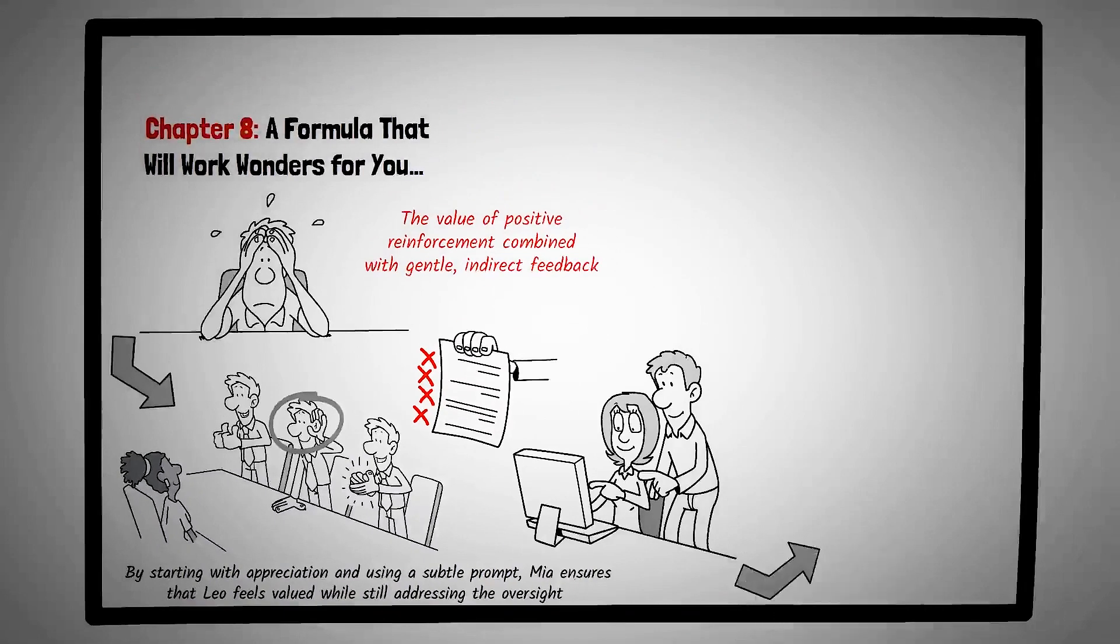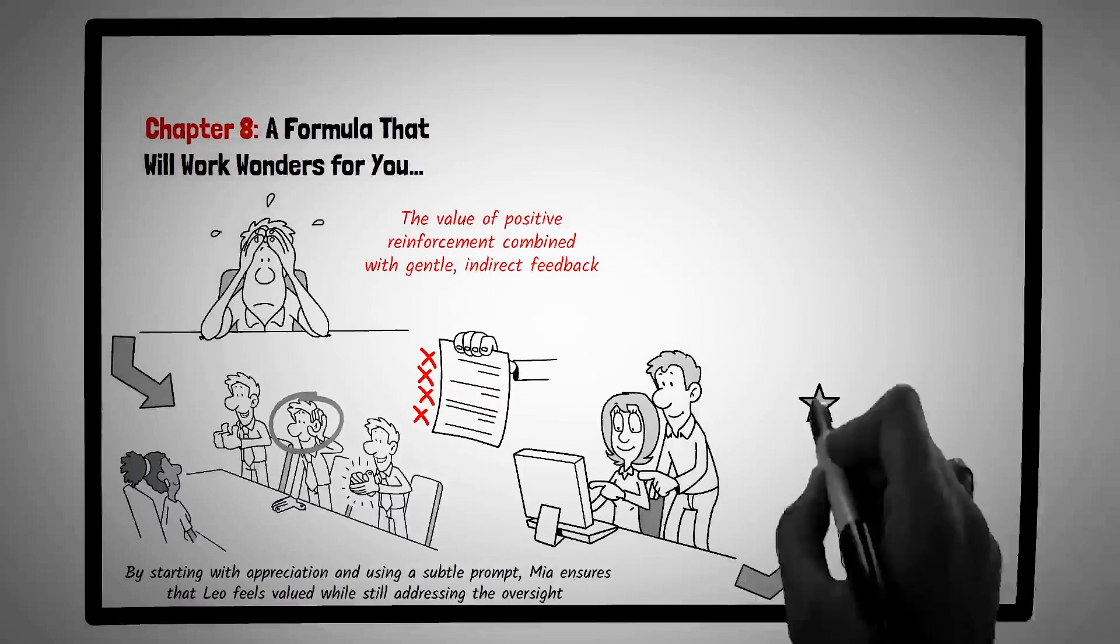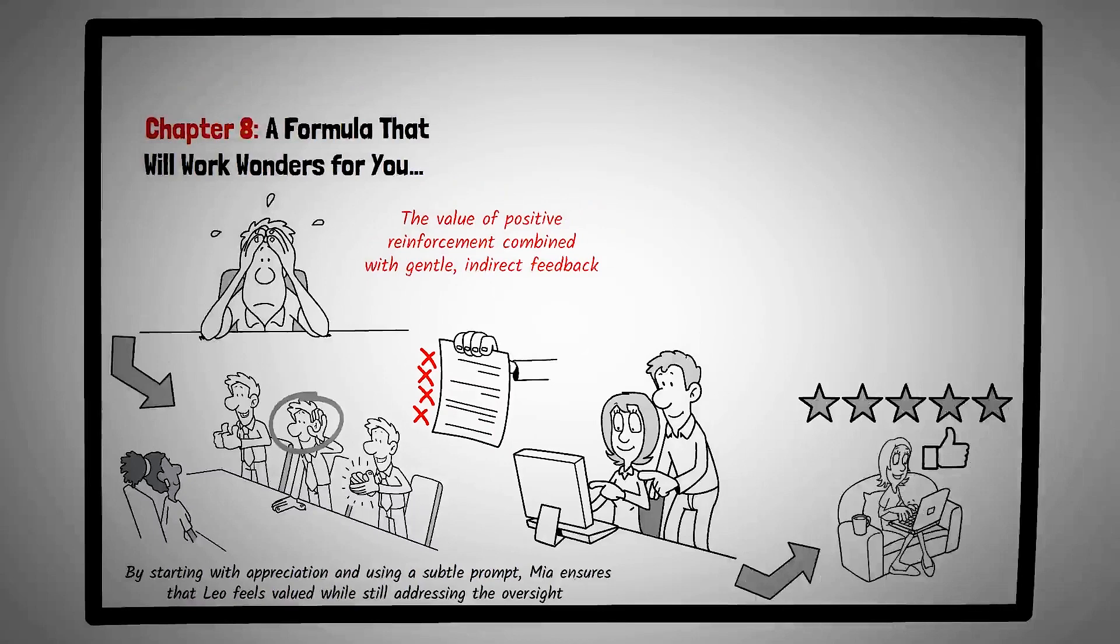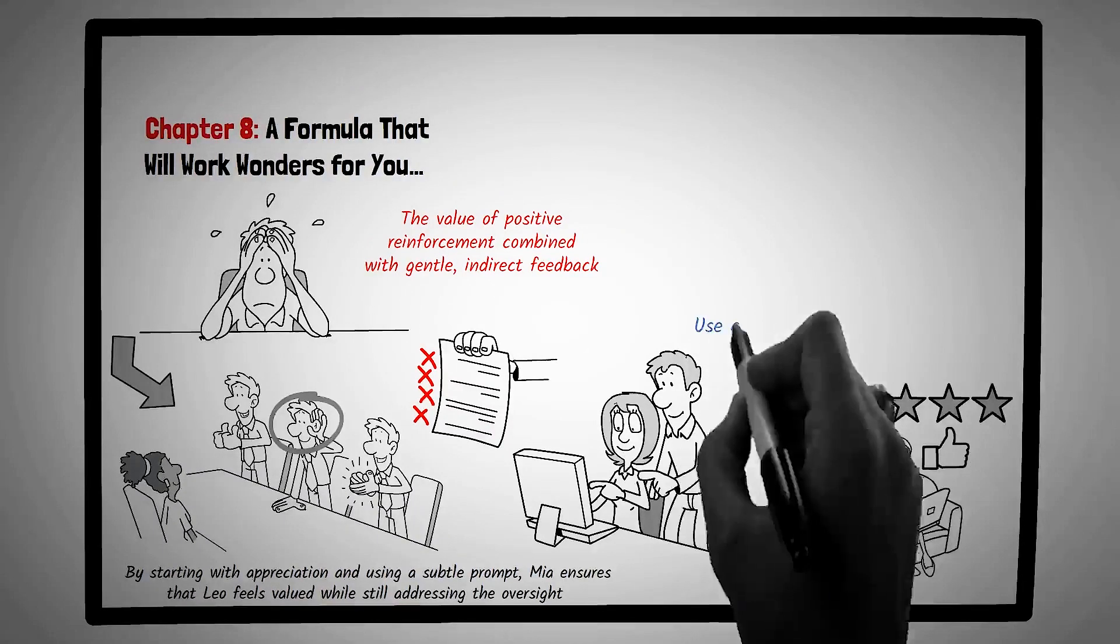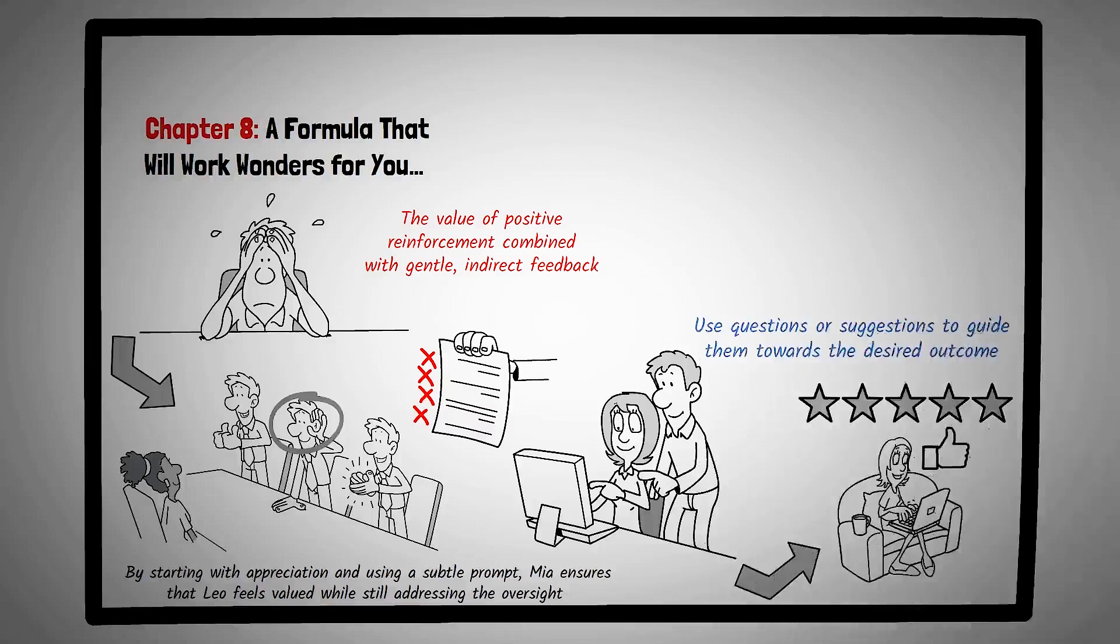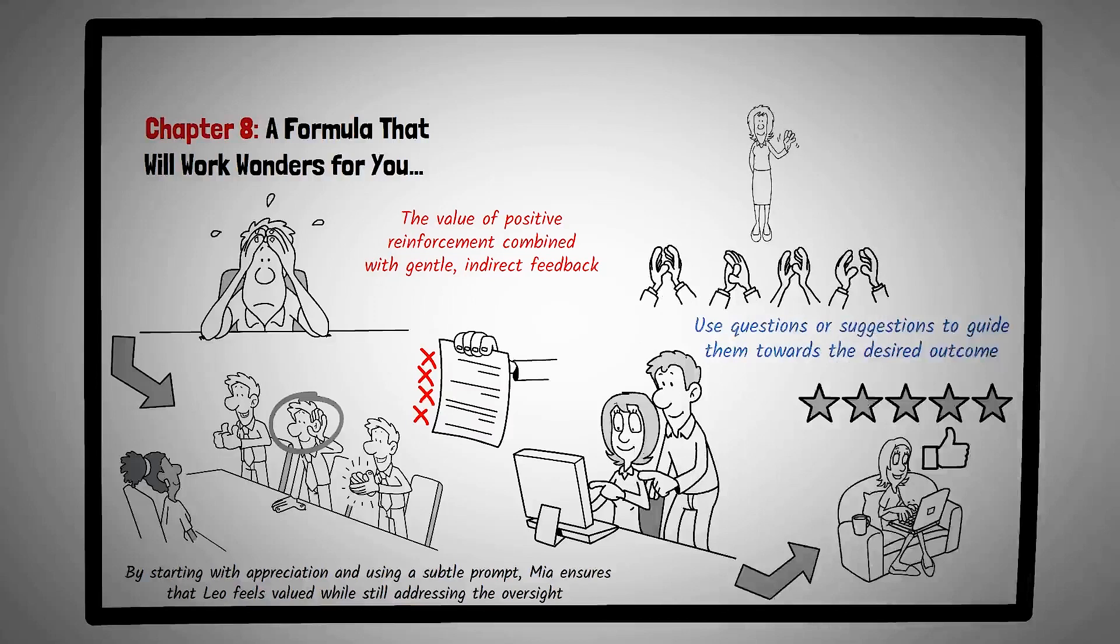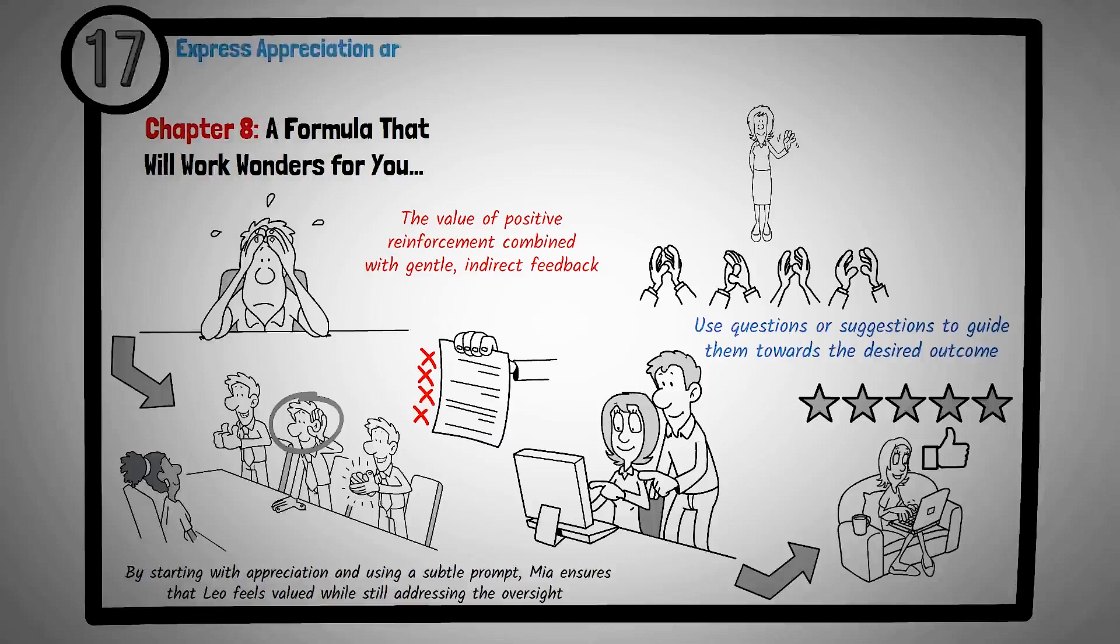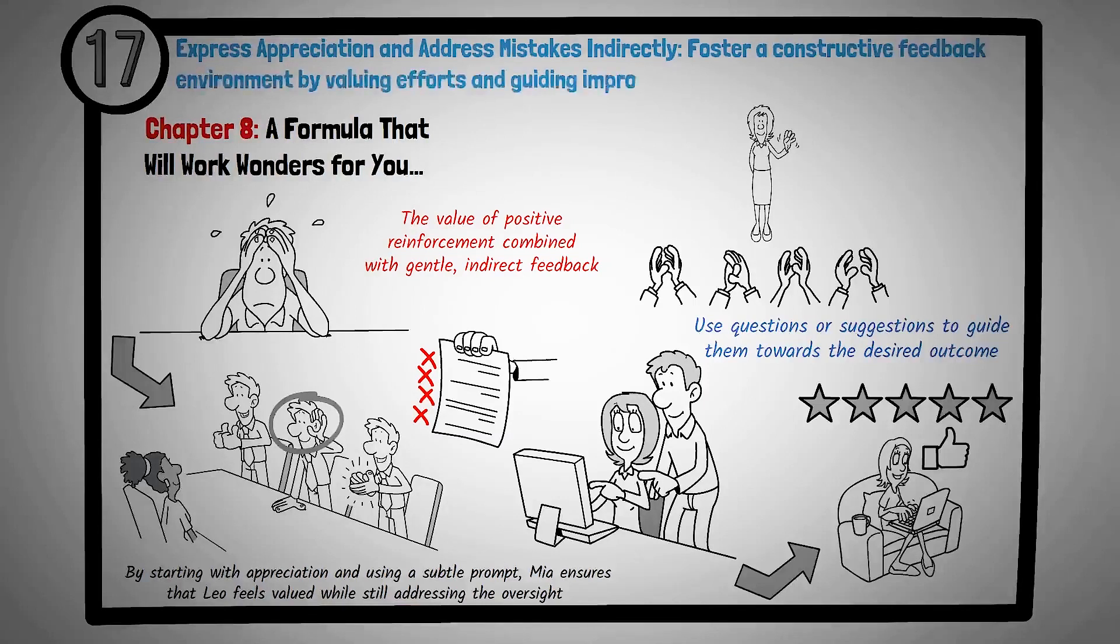When you need to provide feedback or address a mistake, start by acknowledging the positive aspects or efforts of the individual. Then, instead of direct criticism, use questions or suggestions to guide them towards the desired outcome. This approach not only maintains their confidence, but also fosters a constructive environment for improvement. Effective feedback is as much about preserving self-esteem as it is about addressing mistakes. By combining appreciation with indirect guidance, we can create a positive atmosphere that encourages growth and collaboration. Principle number seventeen is express appreciation and address mistakes indirectly. Foster a constructive feedback environment by valuing efforts and guiding improvements subtly.